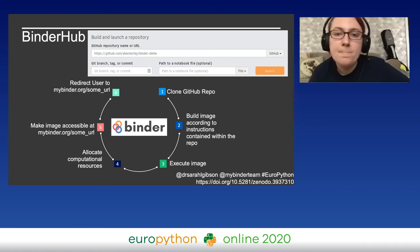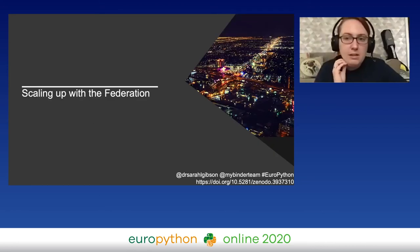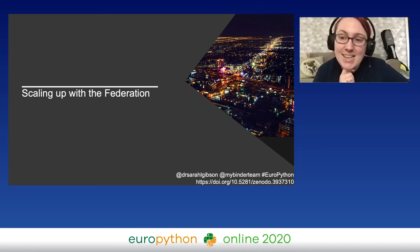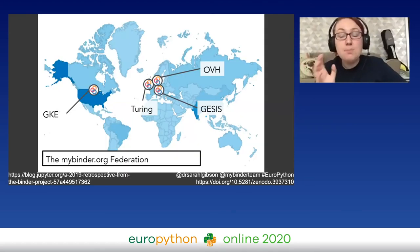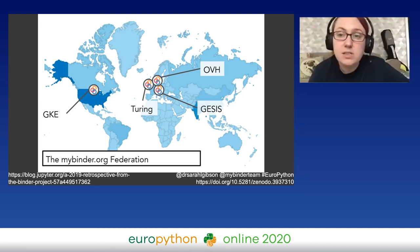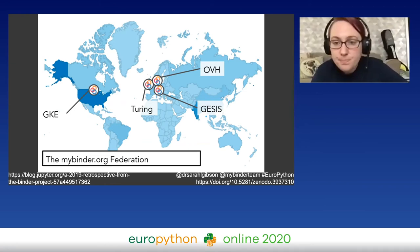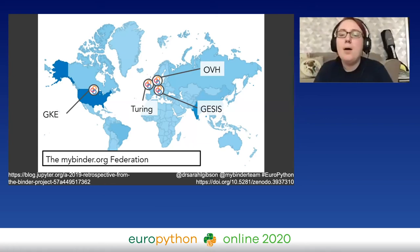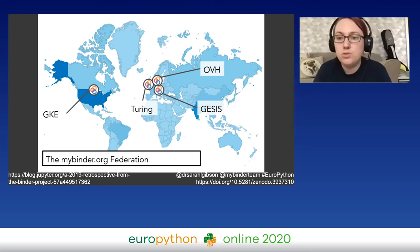How did we manage to scale to 140,000 users per week? We created a federation. mybinder.org is supported by four clusters around the world, including one I manage at the Turing Institute. Federating the service means we can be resilient against both cluster outages and funding changes. We can be sustainable by sharing the workload and knowledge — the service can persist in spite of changes amongst resources and people.